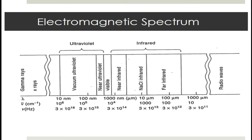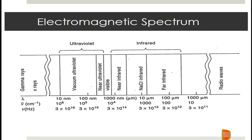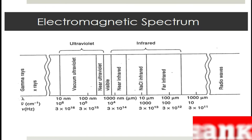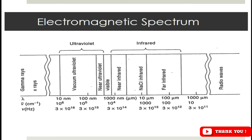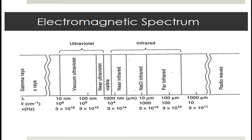Gamma rays and X-rays lie at the shorter wavelength end of the electromagnetic spectrum, so they are highly energetic waves. They are important for medical diagnosis, but for analytical purposes they are not in much use.